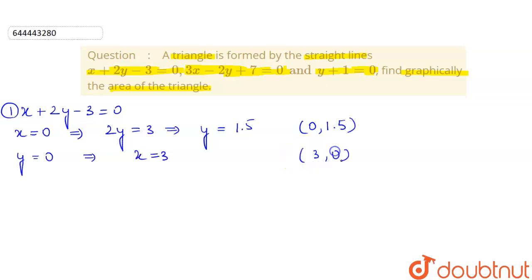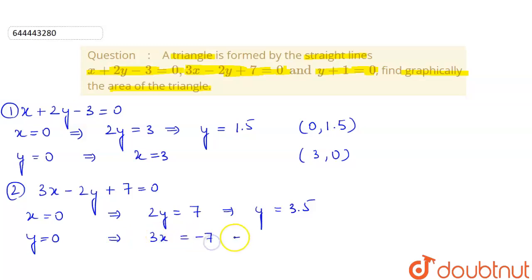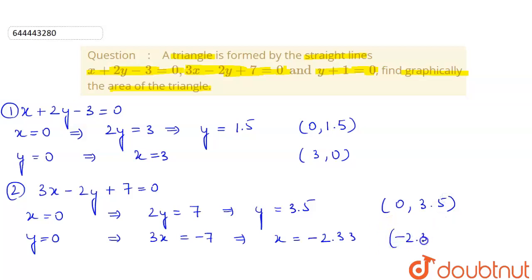For our second equation 3x - 2y + 7 = 0, if we put x = 0, we get 2y = 7, therefore y = 3.5. And if we put y = 0, we get 3x = -7, therefore x = -2.33. So our coordinates are (0, 3.5) and (-2.33, 0). Our third line is y + 1 = 0, which can be written as y = -1.